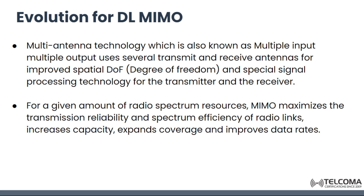MIMO, also known as multiple input multiple output, is a multi-antenna technology that uses several transmitters and several receivers to achieve improved spatial degree of freedom. It also has special signal processing technology for the transmitter and receiver. For a given amount of radio spectrum resources, MIMO maximizes transmission reliability and spectrum efficiency of radio links, increasing capacity, expanding coverage, and improving data rate.